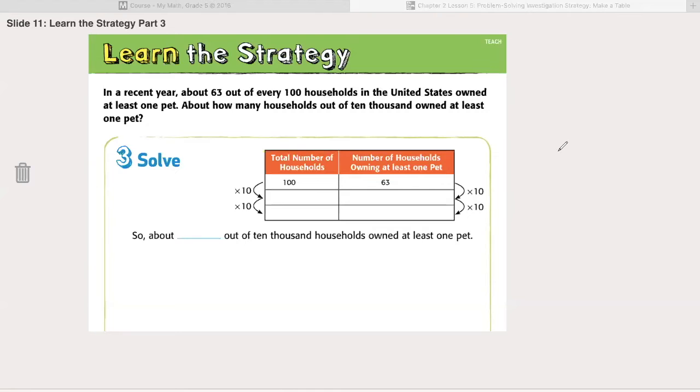Step three, solve. The total number of households currently for my statistic is 100. I want it to become 10,000. How can I get there? I can multiply by the power of 10. If I multiply 100 times 10, that zero transfers over and I have 1,000. Two zeros becomes three. We're closer but not quite there. If I multiply by 10 again, I get 10,000. Three zeros becomes four.